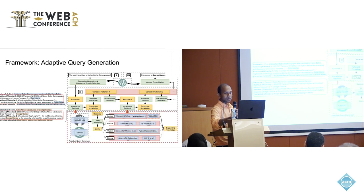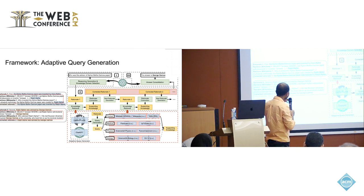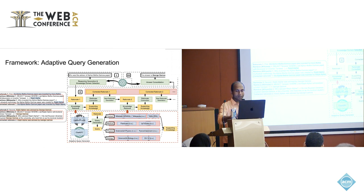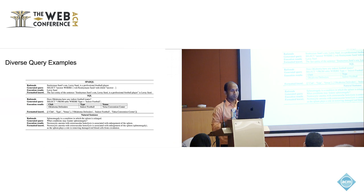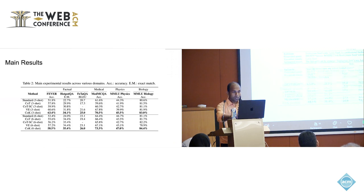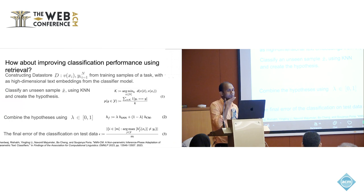Interestingly, the knowledge retrieval component we developed used a diverse set of LLMs — GPT, LLaMA 2 fine-tuned with LoRA, etc. — each trained on different query structures and databases such as SQL or plain text. Depending on the database, the queries change. Results are significantly better than the baselines.